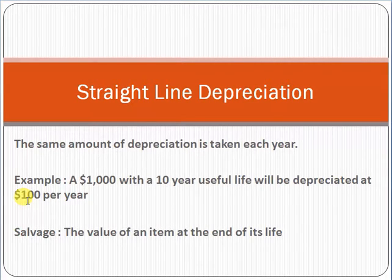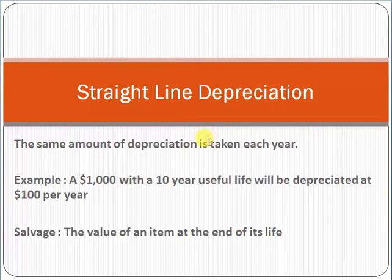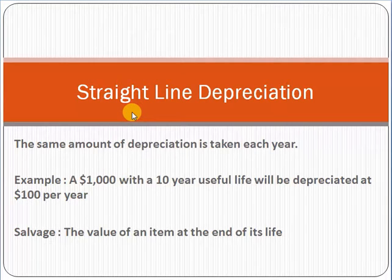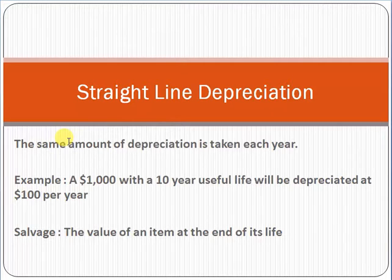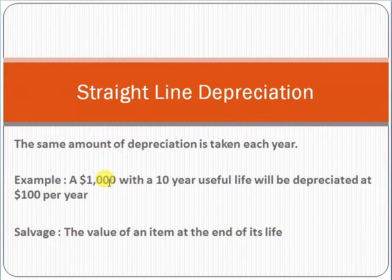There is another term here: salvage. Salvage means the value of an item at the end of its life — what will its value be when it reaches the end of its useful life. Coming back to the main point, straight-line depreciation means you deduct the same amount each year, for example $100 per year from $1,000 over 10 years.